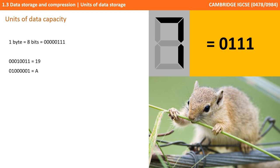Therefore, a byte is 8 bits. Those 8 bits can be used to represent lots of different types of data. For example, it could be a number, it could also be a letter or a symbol if every letter had its own binary sequence. Equally, it could be part of a picture or a sound file. This is exactly how computers work, and we'll explore each of these concepts in more detail in other videos in this unit.